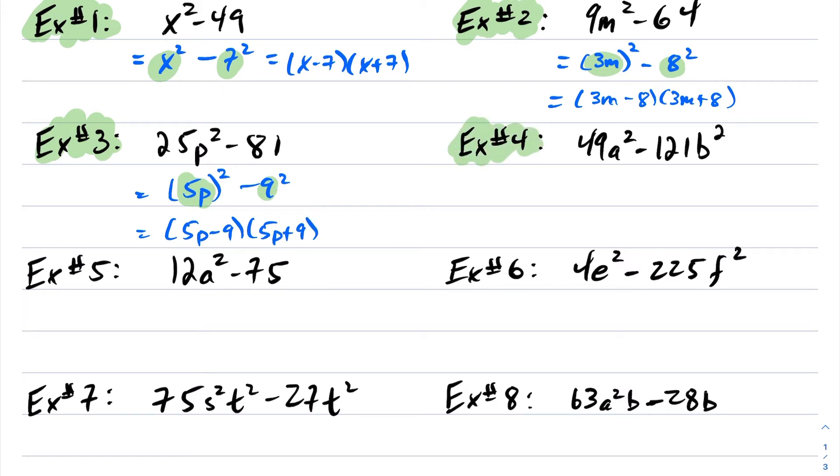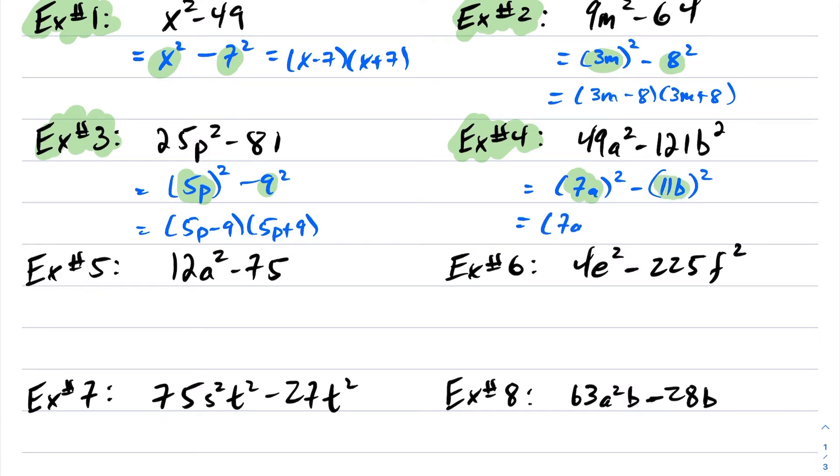Okay, example 4. 49a² - 121b². Right? 7² is 49, 11² is 121. So this is my x, and now this is my y. So this becomes (x - y)(x + y).